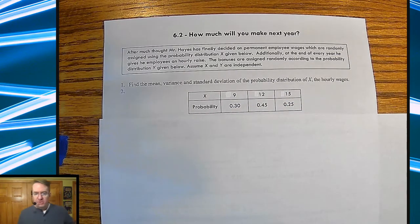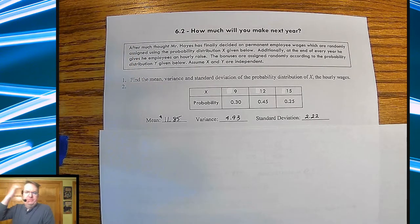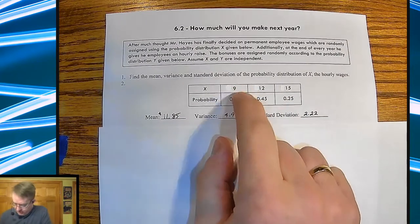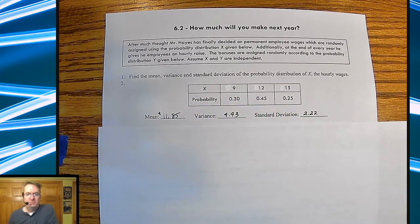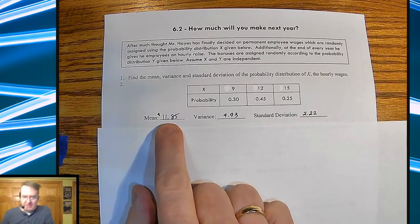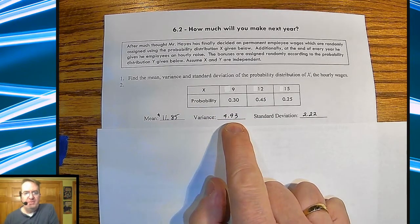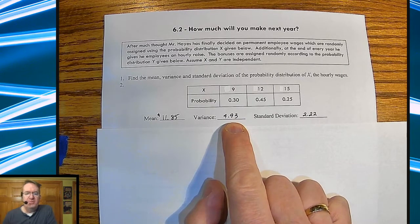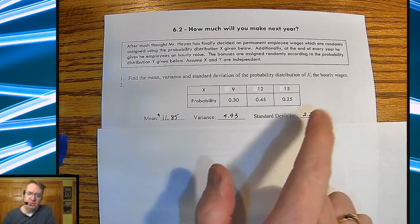And at the end of every year, I'm going to give you guys a raise. And I'm going to randomly assign that, because why not? Who cares about merit at this point? So the mean of this data up here, you go through and you can find the expected value, multiply these out, find the difference, there's ways to do it on the calculator, talk to me if you want to know about that. So $11.85 is your mean.